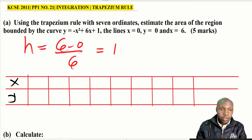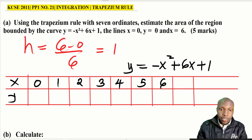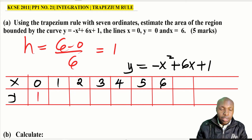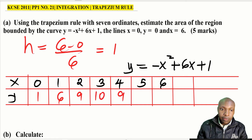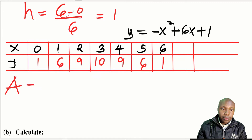The table has x and y values. We use the function y = -x² + 6x + 1 to fill the table for x = 0, 1, 2, 3, 4, 5, 6. Substituting each value of x into the function gives us the corresponding y values, which are our seven ordinates.